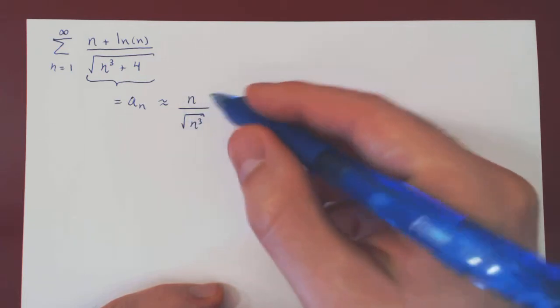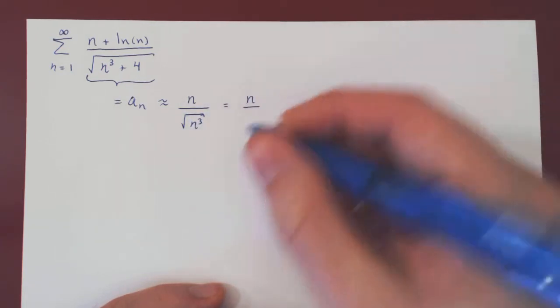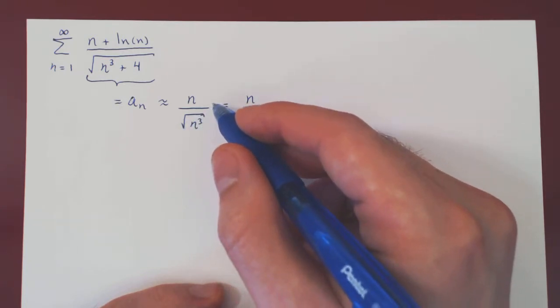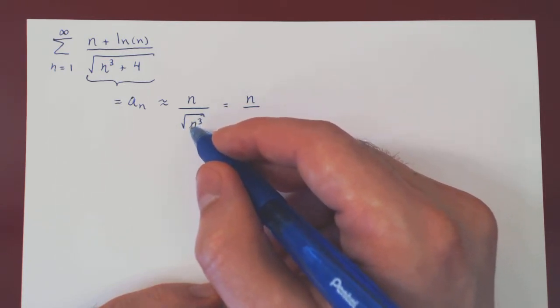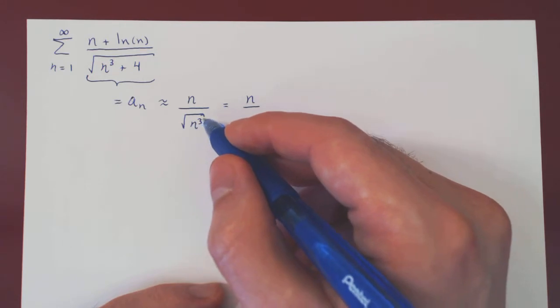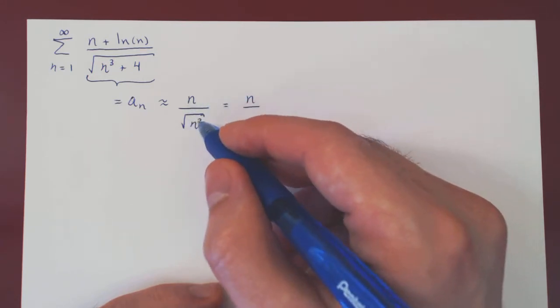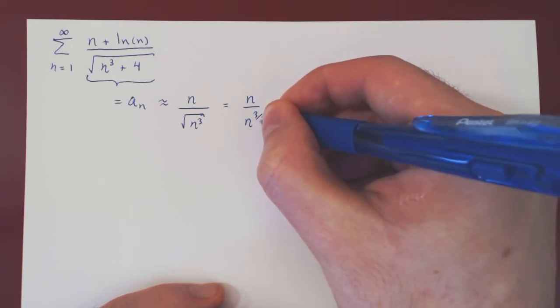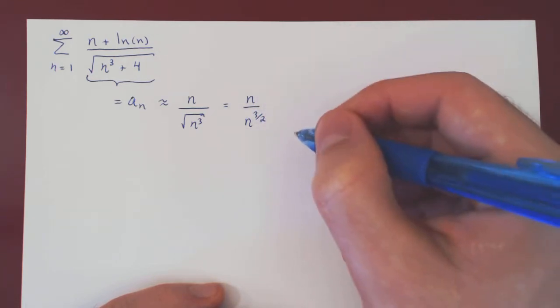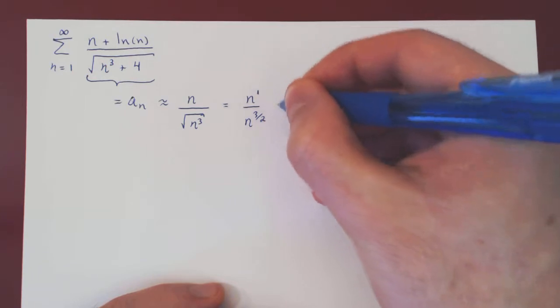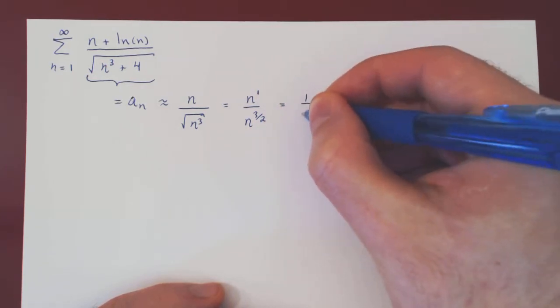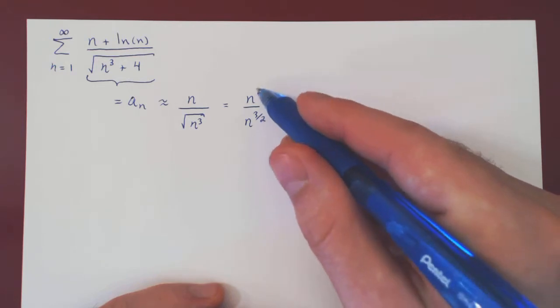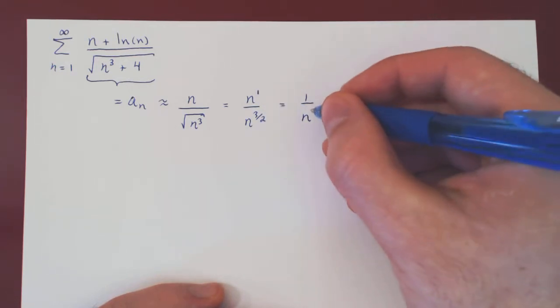We can simplify a little bit. So, we have n over the square root of n cubed. Think of the square root as a power of 1 half. So, here you double exponentiate n. You have n cubed to the 1 half. So, you can multiply the exponents. So, it's n to the 3 half. But, n is simply n to the 1. So, I can keep my n on the denominator and do 3 half minus 1, which is, of course, 1 half.